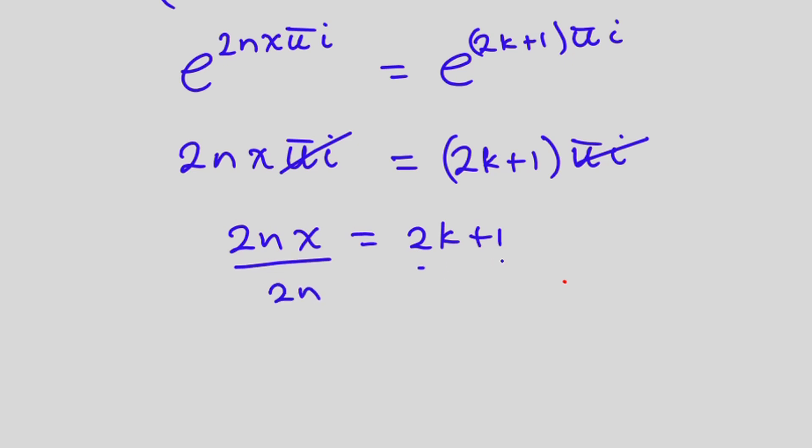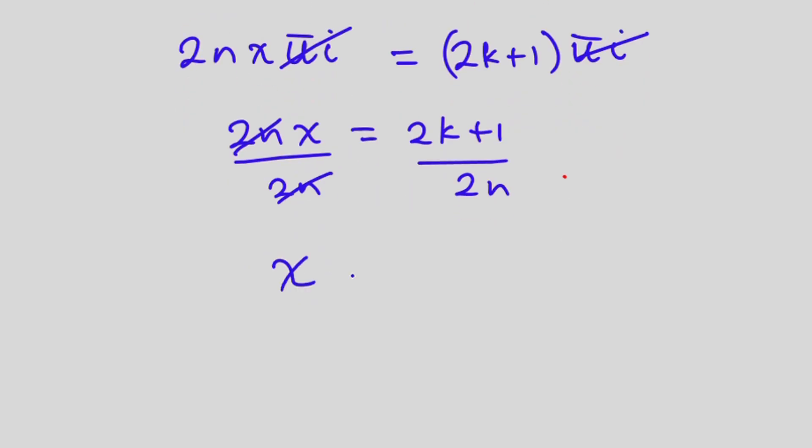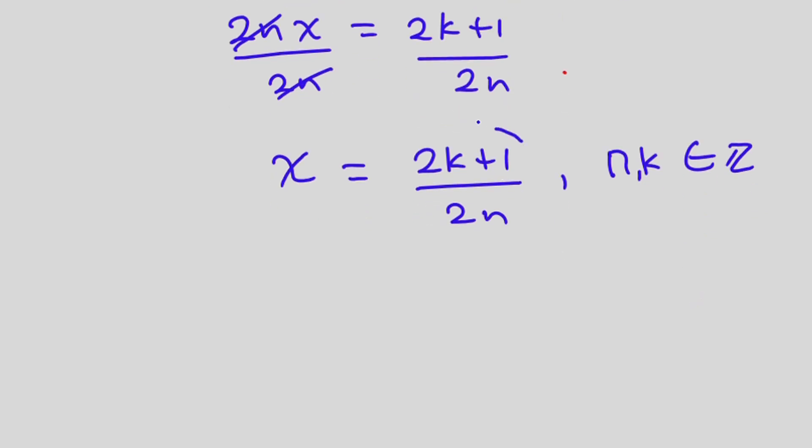Let's go ahead and divide through by 2n and we are left with x which is equal to 2k plus 1 divided by 2n. Now note that n and k are all integers. What do we see? The numerator is an odd number and the denominator is even, so this is the answer for x.